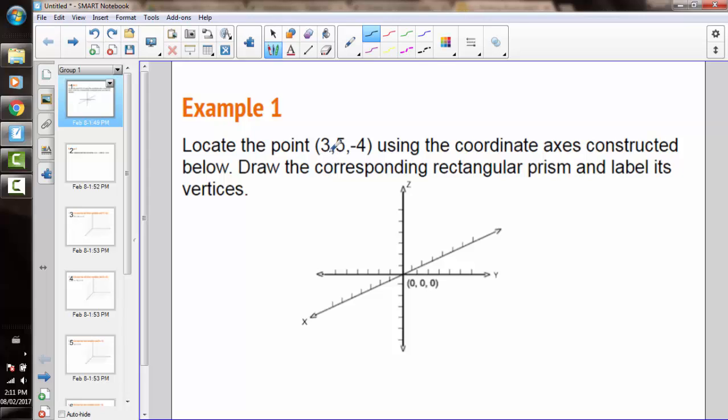So, if I want to draw a point using my x, y, and z-axis, one of the ways we can represent that is by drawing a little rectangular prism to locate the point. And I'm going to go step by step, so if the point I'm trying to find is (3, 5, -4).